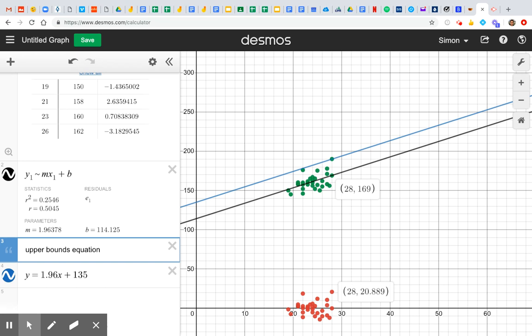So it's going to be the same x coordinate of 28, but I need to go 20.889 below the expected value.